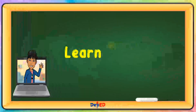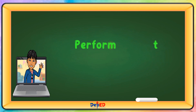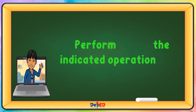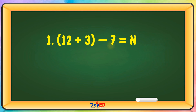Learning Task 1: Perform the indicated operations. Problem: (12 + 3) − 7 = N. Let us first solve the operation inside the parentheses: 12 + 3 = 15. Then 15 − 7 = 8. N is equal to 8.